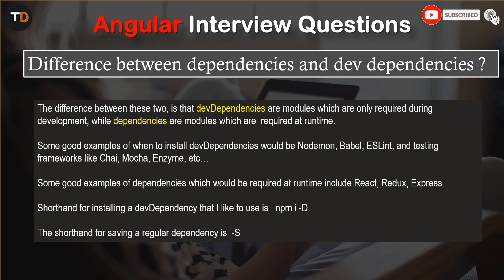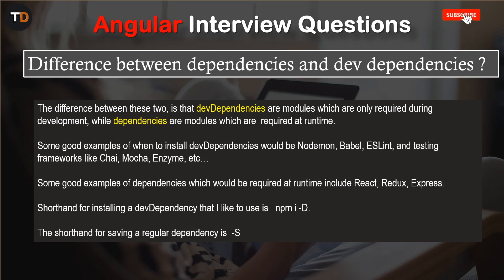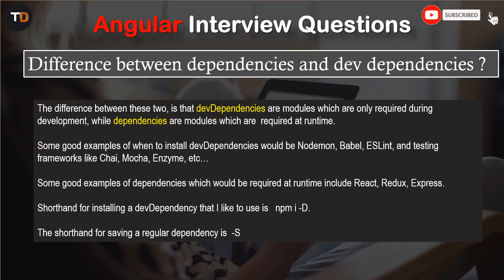eslint, and testing frameworks like Jest, Mocha, and Enzyme. Some good examples of dependencies which are required at runtime include React, Redux, and Express.